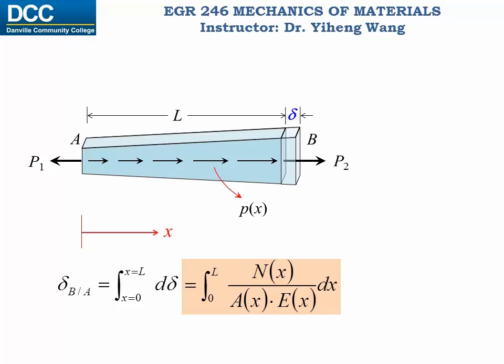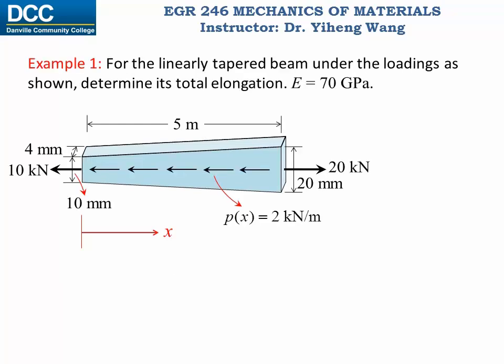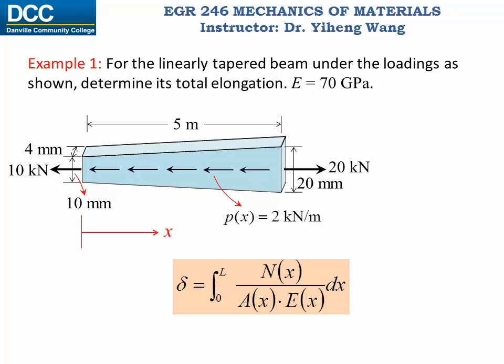Be very careful that in this equation, the force has to be the internal normal force. Let's look at this example. If we know the dimensions of this linearly tapered beam, and we know the loadings, we need to determine its total elongation. We are going to use this equation to calculate the total elongation, and in this equation we need to know N, the internal normal force, A, the cross-sectional area, and E, Young's modulus. Young's modulus is given and is a constant for this beam.